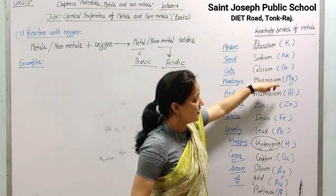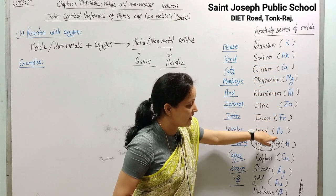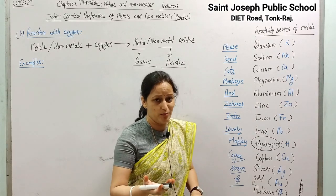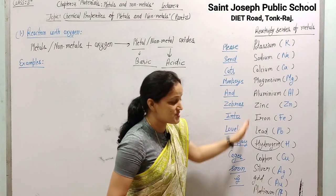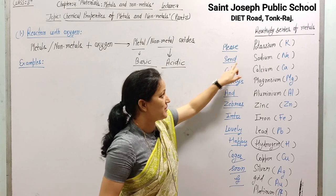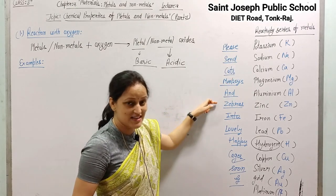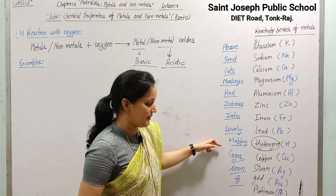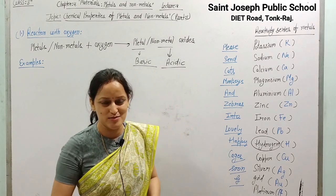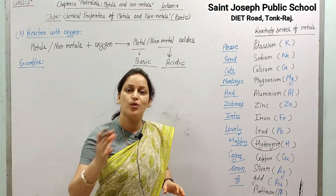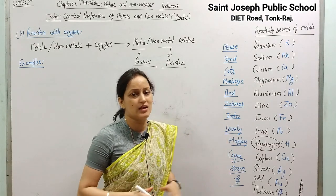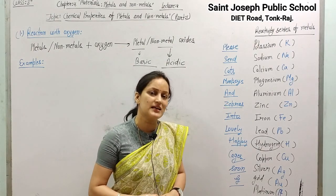There is one more interesting method: 'Khaasi Naat Ka Maali, Aaloo Zara Fi Ke Pakata Hai.' Or using English words: 'Please Send Cats, Monkeys And Zebras Into Lovely Happy Cages, Sunji Indian Traditions.' These are a few methods; you can make your own way to memorize this table because the activity series is very helpful in senior classes also.